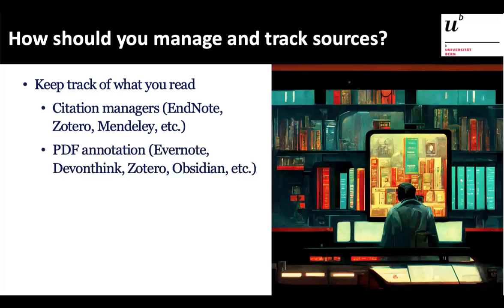The other part of tracking and managing sources is not just tracking citations but annotating PDFs and taking notes on them. Some citation managers allow this within the program. You can also use EverNote, DevonThink, Zotero, Obsidian — anything that makes you happy, as long as you use it consistently. I've really liked Zotero since I started using it. DevonThink is also wonderful — you can import PDFs, annotate them, and connect everything to your citation manager — but it's expensive. Zotero, unless you use online storage, is free.